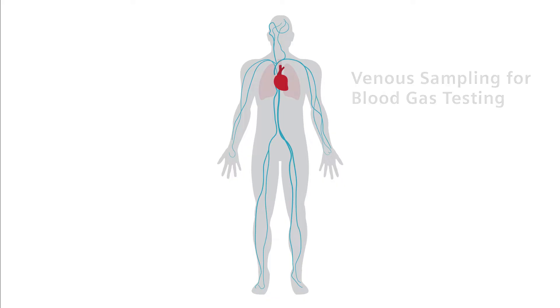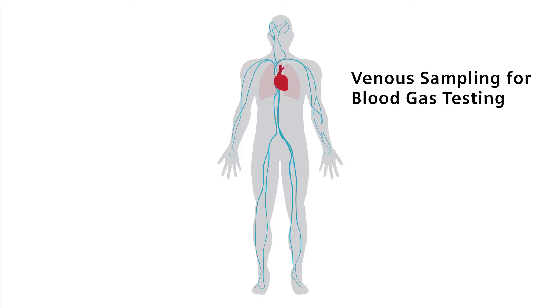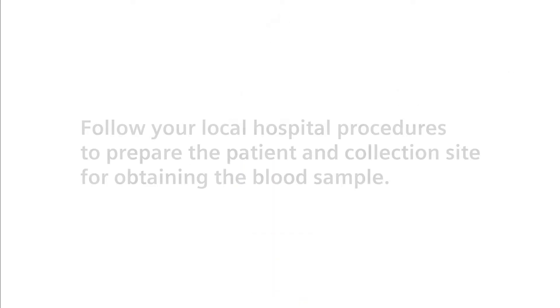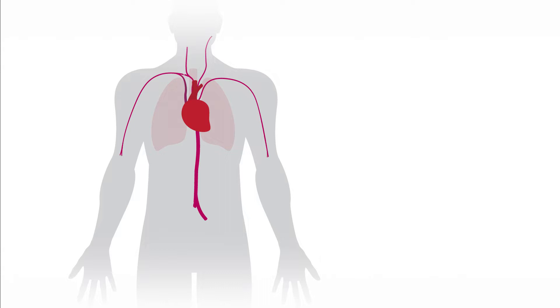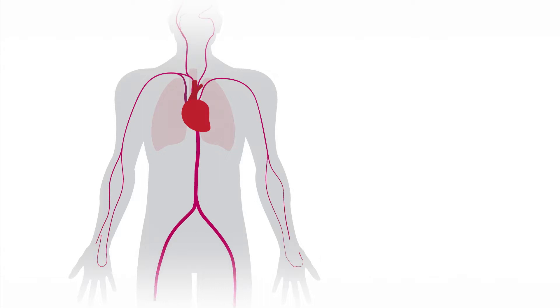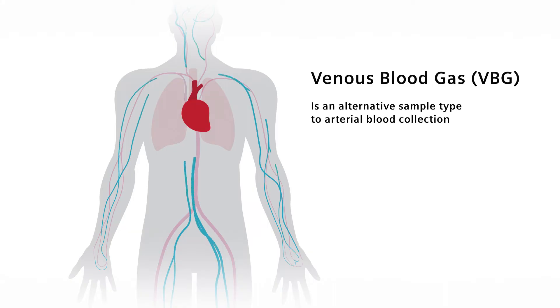This is an instructional video about how to collect a venous blood gas sample and the proper handling of the sample immediately after obtaining the blood and just prior to performing the blood gas analysis. Follow your local hospital procedures to prepare the patient and collection site for obtaining the blood sample. Arterial blood may be difficult to obtain due to a patient's diminished pulse rate or low blood pressure, whereby a venous blood collection represents a viable option.